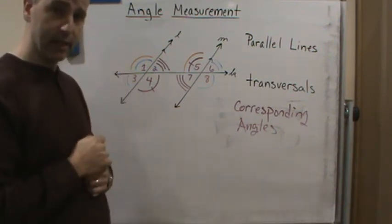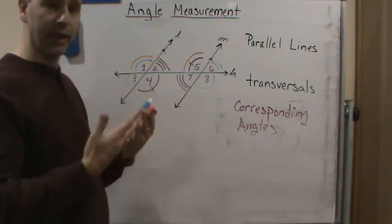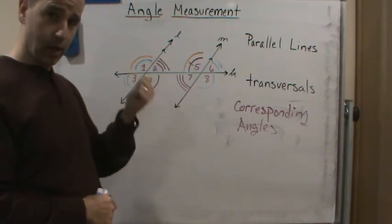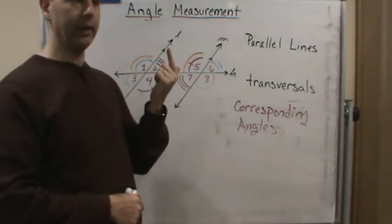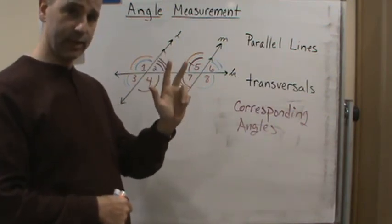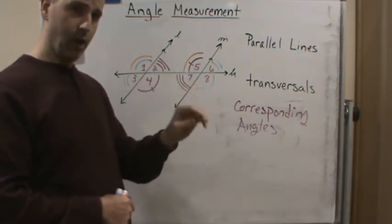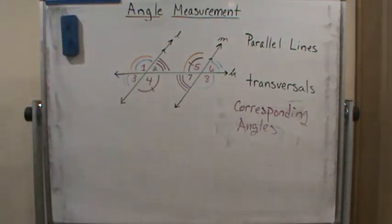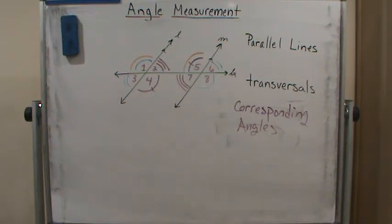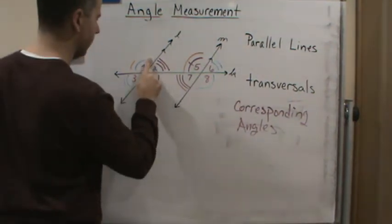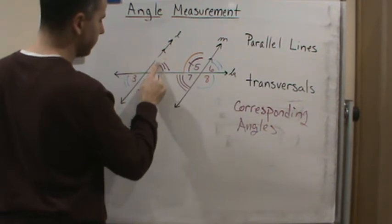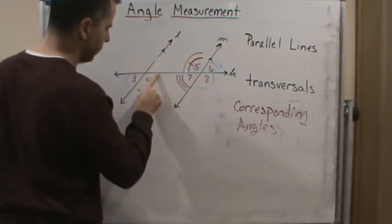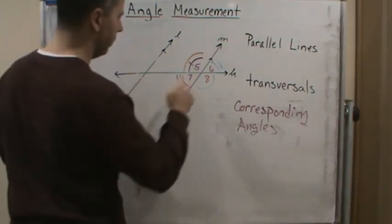So now we've got three characteristics of when angles have the same measure: alternating interior angles, alternating exterior angles, and corresponding angles. These are characteristics of when we have angles of the same measure when dealing with transversals. Also, don't forget — vertical angles are congruent. So there are lots of tools we can use in our toolbox here.